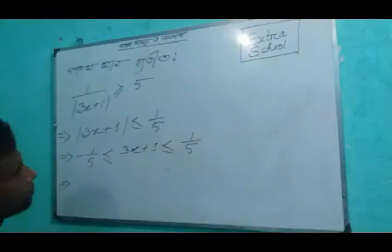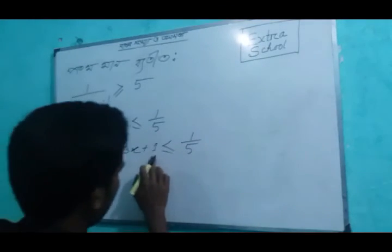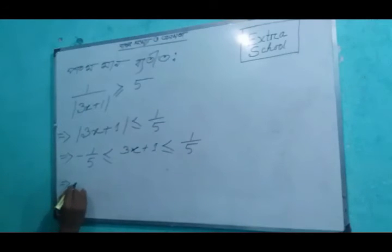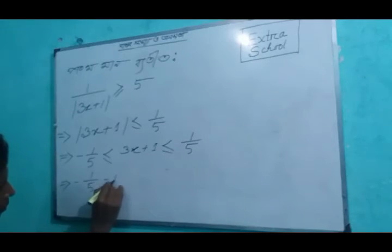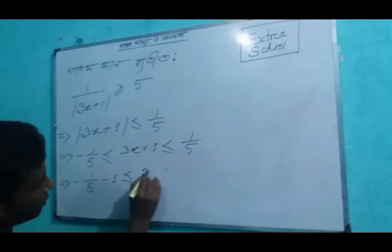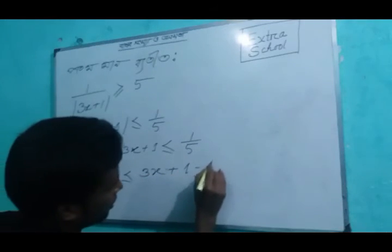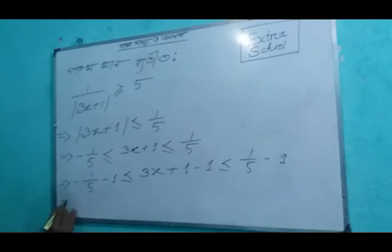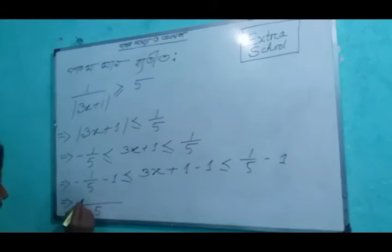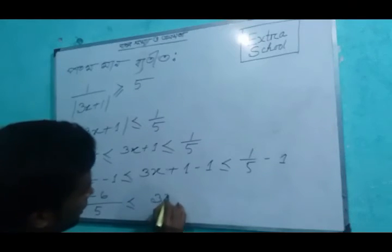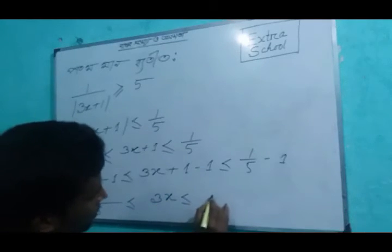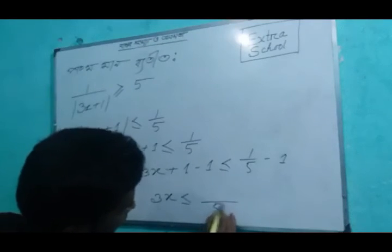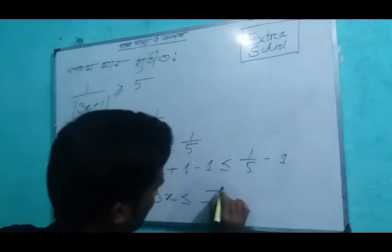So here, 3x plus 1 less than or equal to 1 by 5, minus 1, less than or equal to 1 by 5 minus 1. We will start with 5 minus 6. This is equal to 2, this is equal to 3x, this is equal to 5 minus 4.